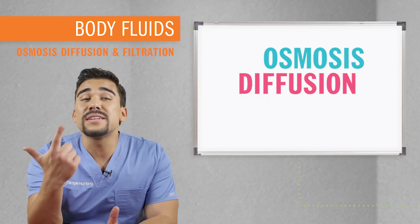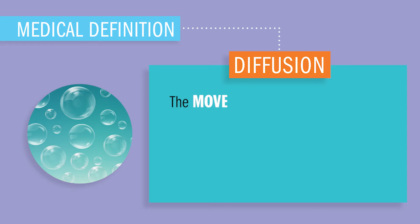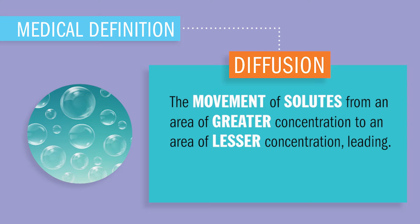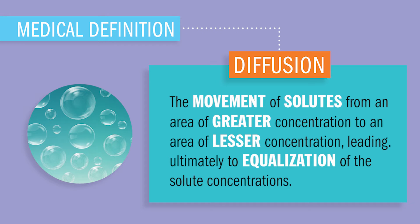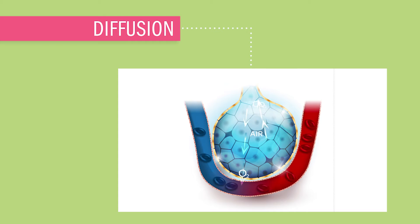Today we're talking about osmosis, diffusion, and filtration for the fluids in your body. Let's go through some fancy medical definitions. Diffusion is the movement of solutes from an area of greater concentration to an area of lesser concentration, leading ultimately to equalization of the solute concentrations. It occurs through random movement of ions and molecules. A great example of diffusion is the exchange of oxygen and carbon dioxide (CO2) inside the lungs between the pulmonary capillaries and the alveoli.